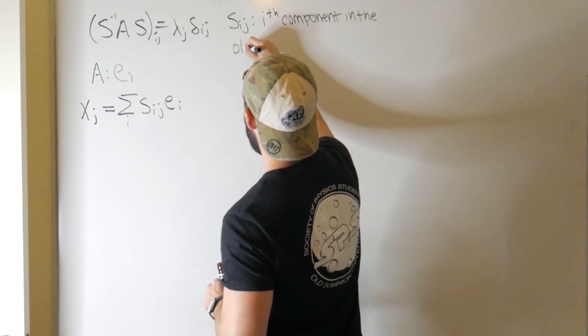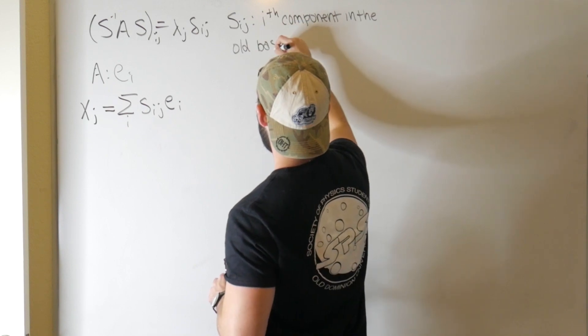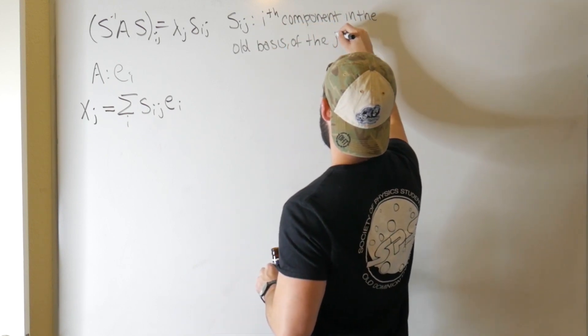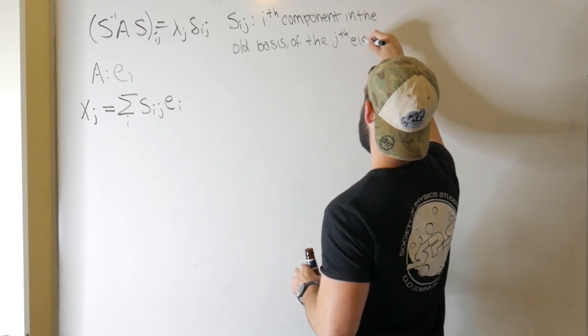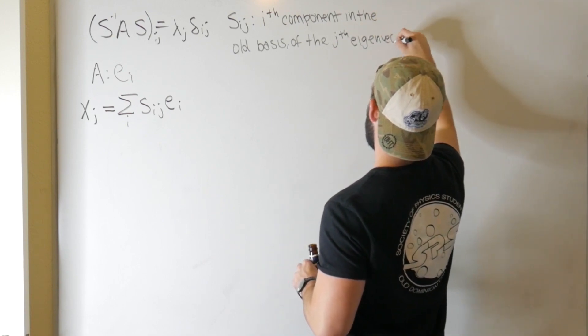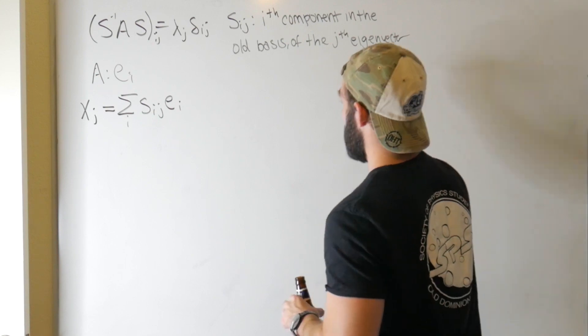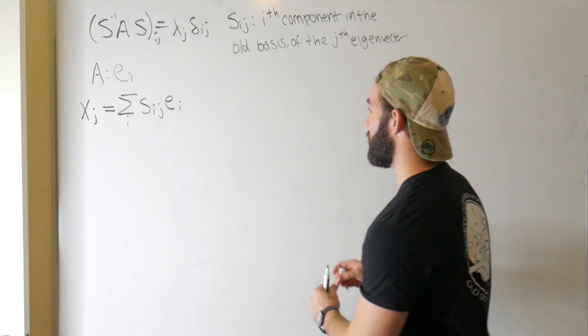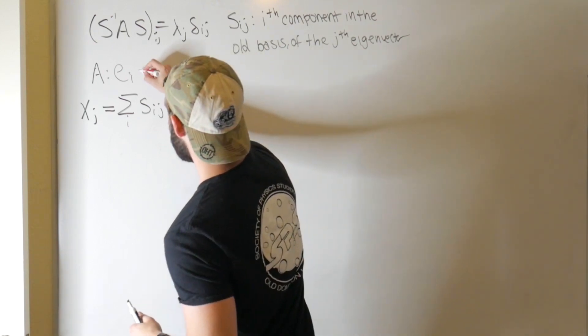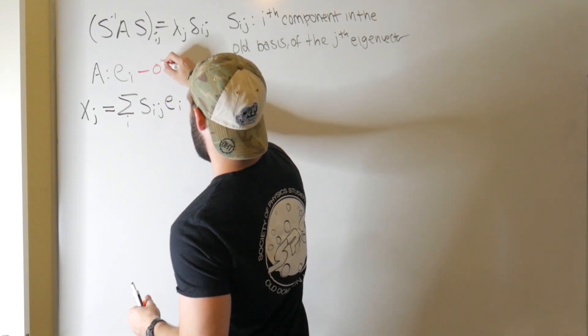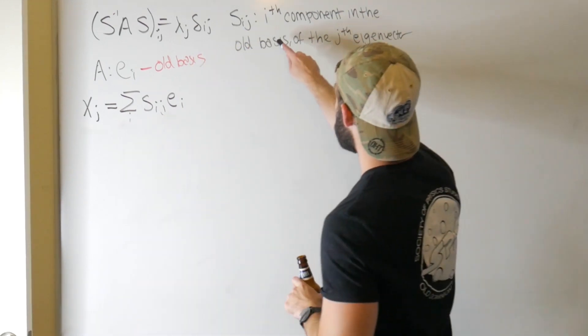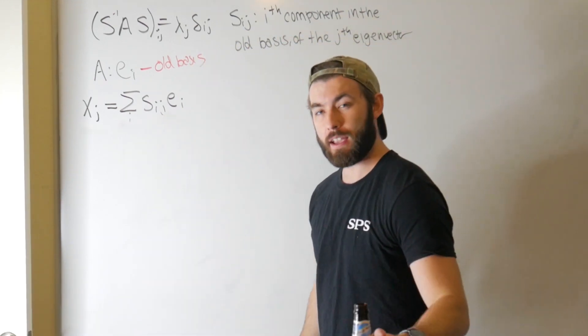Well Sij is defined to be the i-th component in the old basis of the jth eigenvector. Okay, so here, it's actually a bit more inconvenient than I thought it would be. This e sub i, these e sub i are the old basis. What the hell does that mean? Don't worry, I'm going to break it down for you.